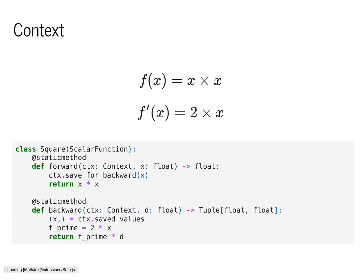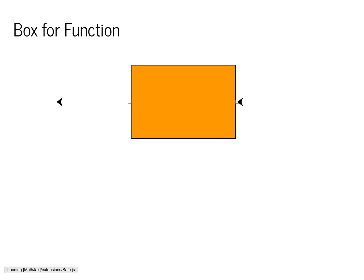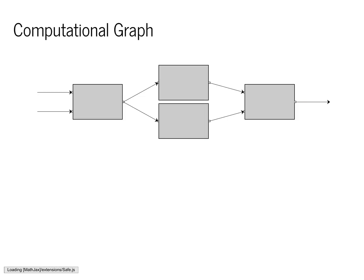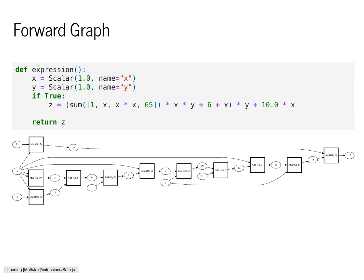In the backwards pass, we're passed two arguments: the context with the saved value, as well as a special value d. Our job is to compute f' of x and return that value times d. We draw this as a box with arrows going the opposite direction. The role of the forward pass was to compute the function of interest, as well as to implicitly compute the computational graph. In the homework module, we included a special visualizer that allows you to write an arbitrary complex mathematical function and shows you what the computational graph will look like.